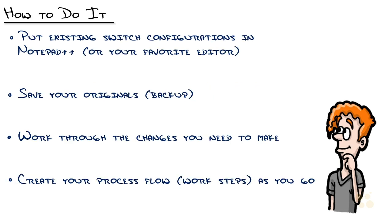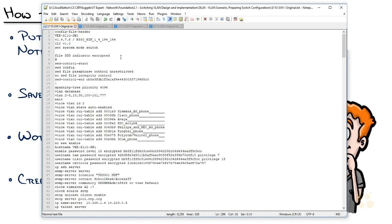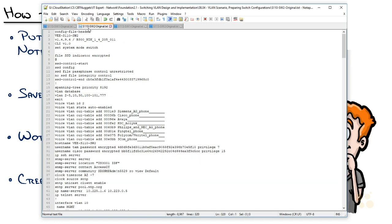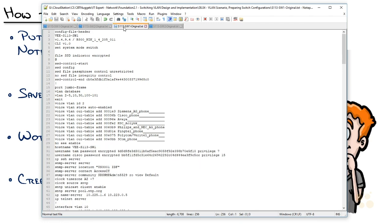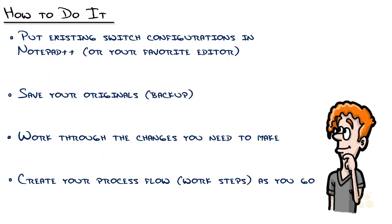So here's how you do it. The first thing is to take all the existing switch configurations and put them in Notepad++ or whatever your favorite editor is. And that's exactly what I've done right here. Take a look at each one of the tabs and what I named them — Suite 110 switch one original, 110 switch two original, and so on down to Suite 113. This is my quote-unquote before configuration. I'm going to save those originals so I at least have something to go back to should everything go haywire.